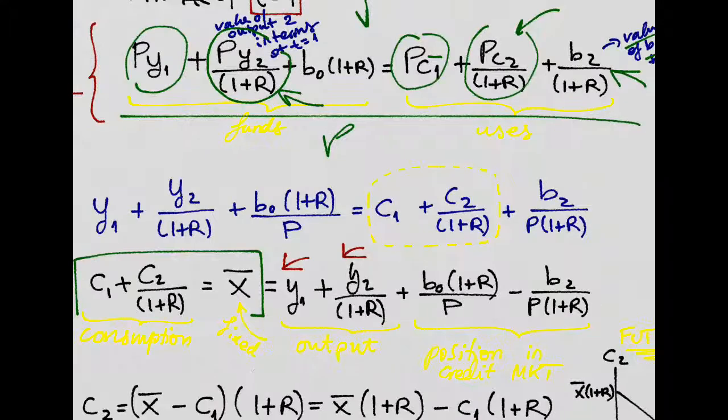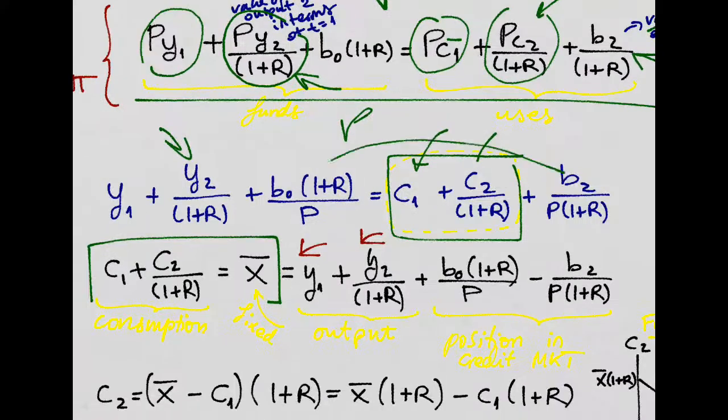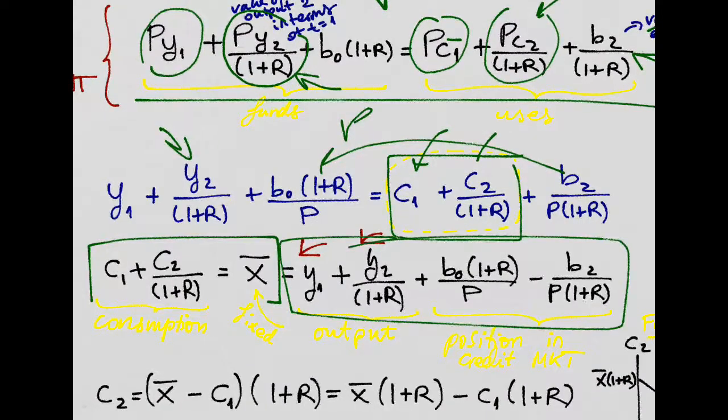And we basically get this, and if we want to solve for this, which is just consumption for the two periods, we're left with this whole expression, which will be called X bar. Why? Because it's fixed.